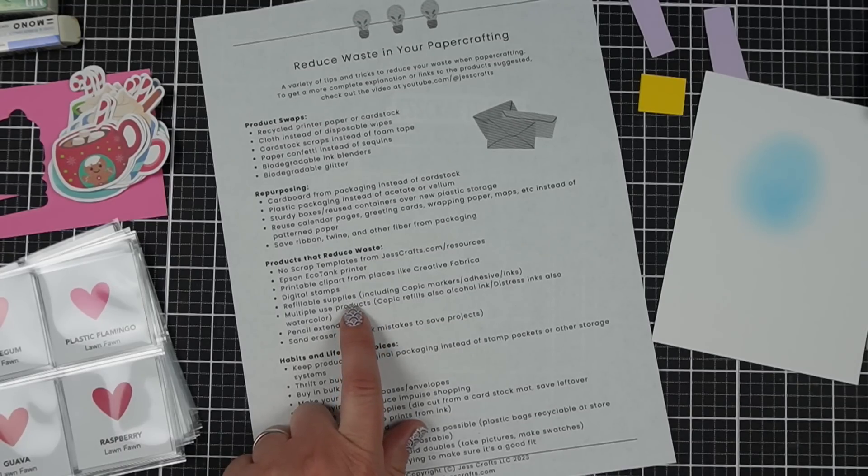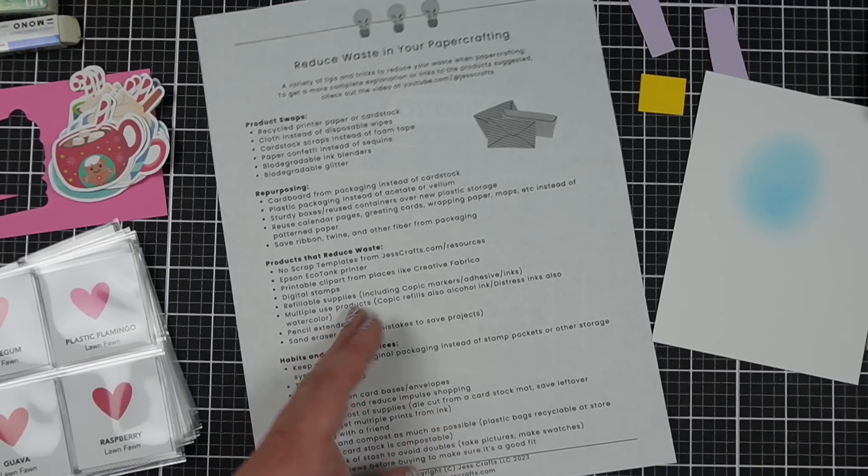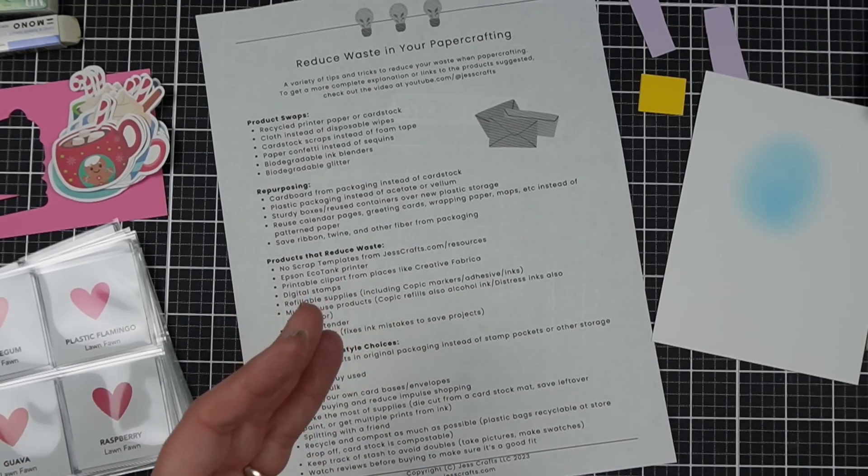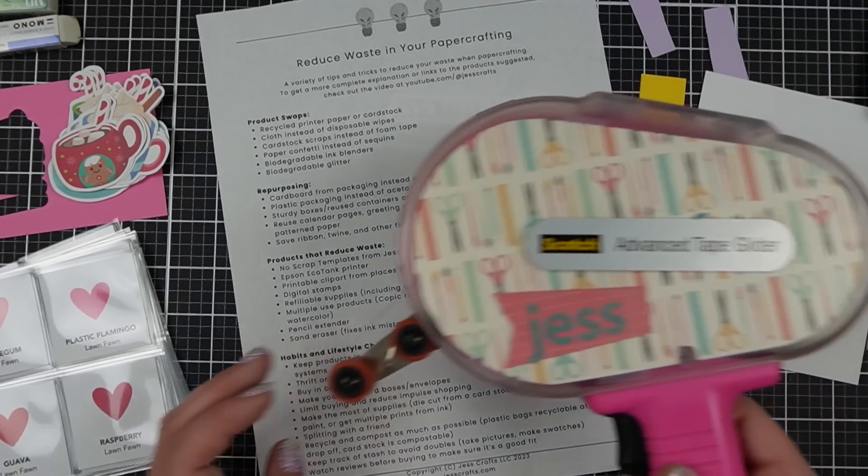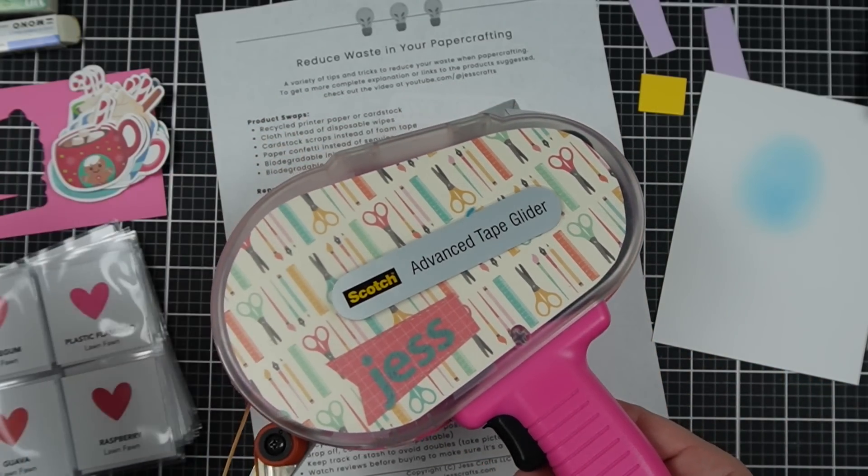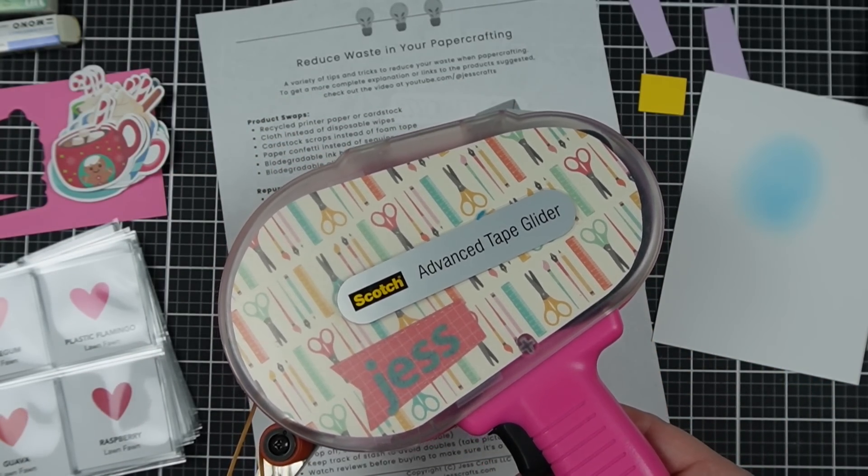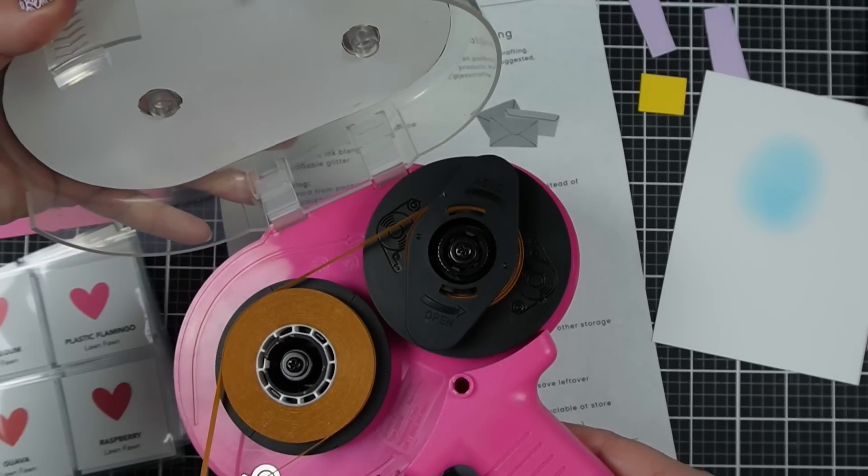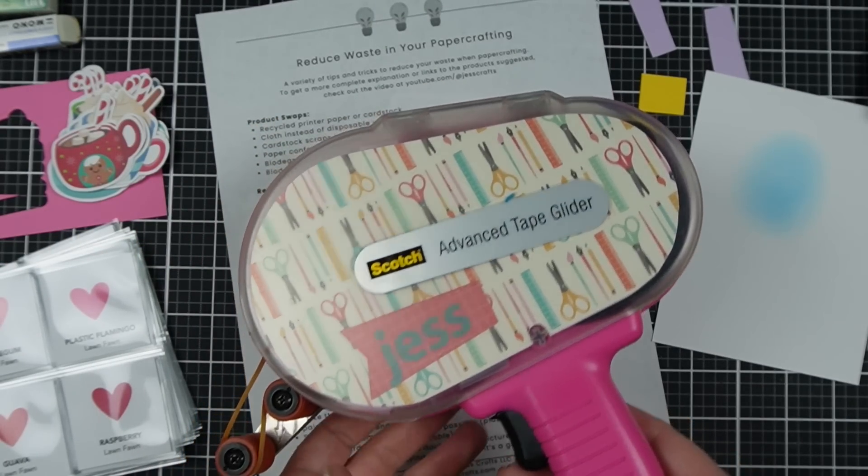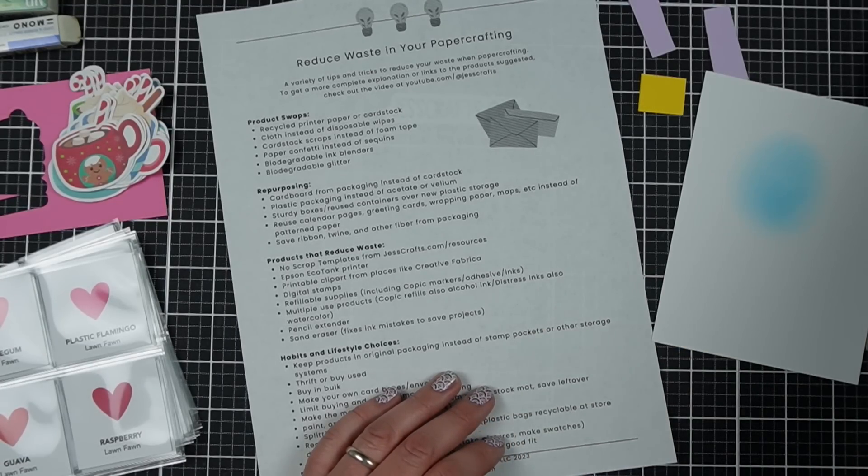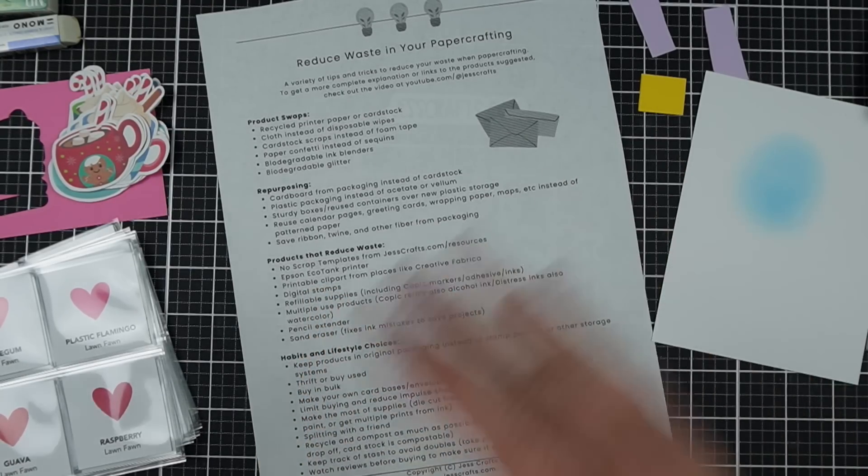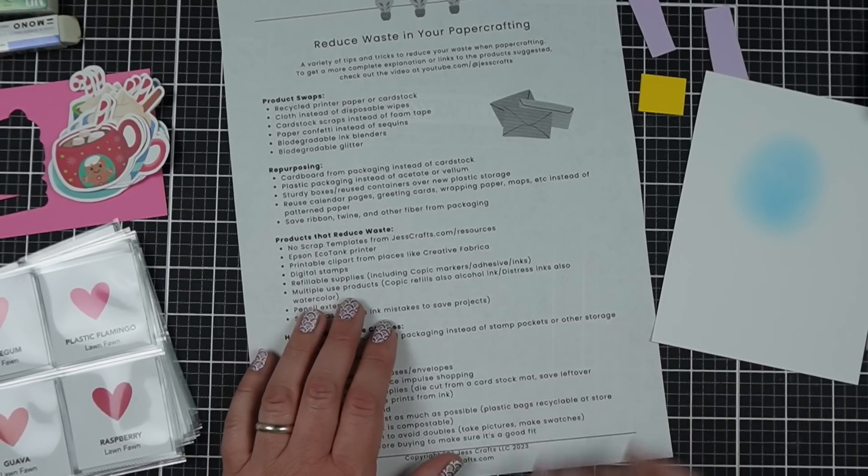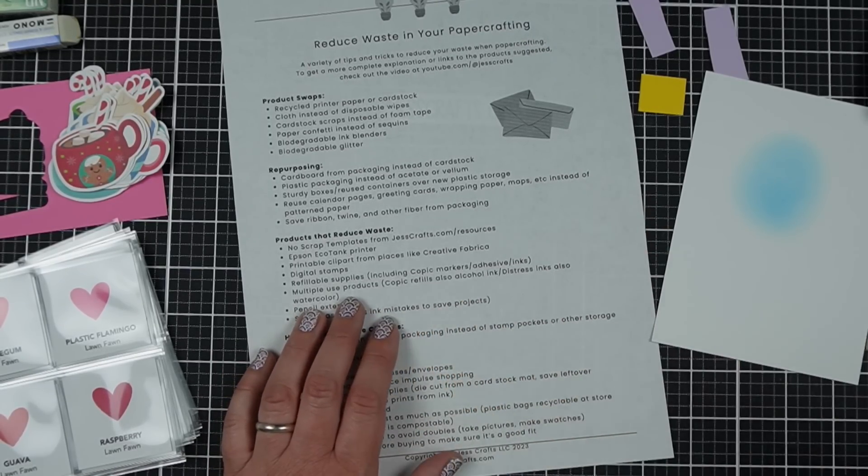Refillable supplies. I think that there's a lot of refillable supplies in crafting. Things like Copic markers, adhesive, and our inks. Most of our inks you can get re-inkers so you don't have to buy a whole new ink pad. I use the Advanced Tape Lider from Scotch. It's a pretty big plastic honking thing, but I have refilled it probably hundreds of times with that tape roll and I don't have to buy a new plastic dispenser at all. So I much prefer refillable or like my Barely Art glue.